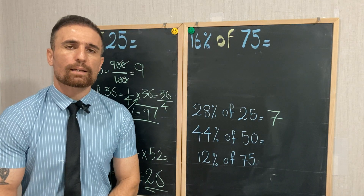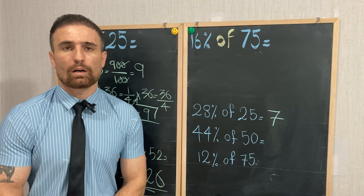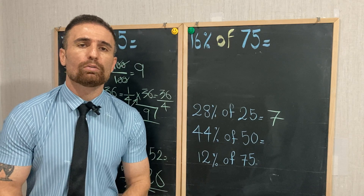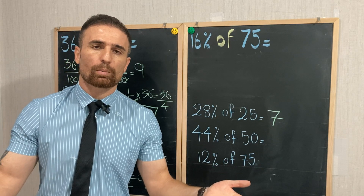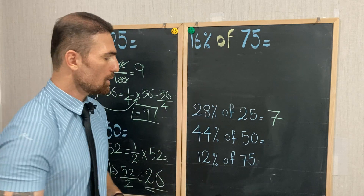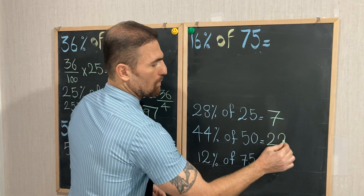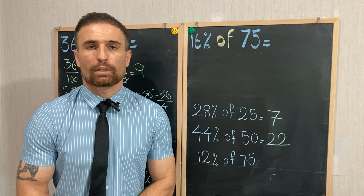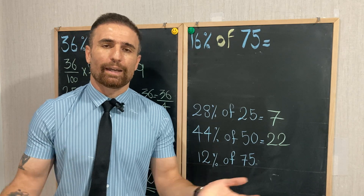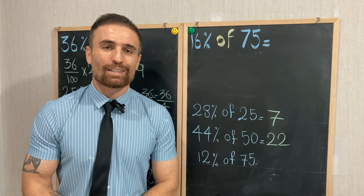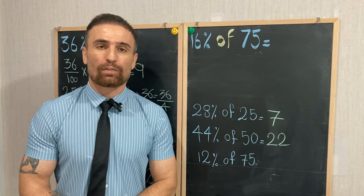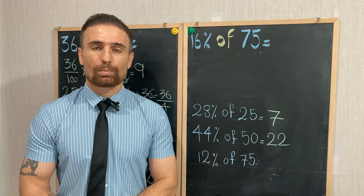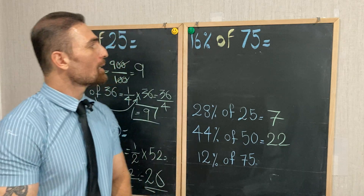52 divided by 2 equals 26, and that is our answer. Now your turn: what is 44 percent of 50? Just divide 44 by 2 — 44 divided by 2 equals 22. Next question: what is 36 percent of 50? 36 divided by 2 equals 18 — less than one second. That is why at the beginning I told you the percentage is gonna be your new best friend.